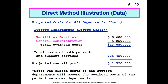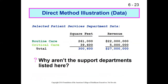Our overall profit — revenues minus expenses — is $1.55 million. We now need to consider how to allocate those overhead costs to our departments because we want to hold the department managers in routine care and critical care responsible for maximizing profitability by generating as much revenue as possible while providing services at as low a cost as possible.